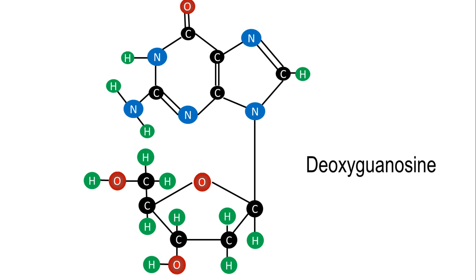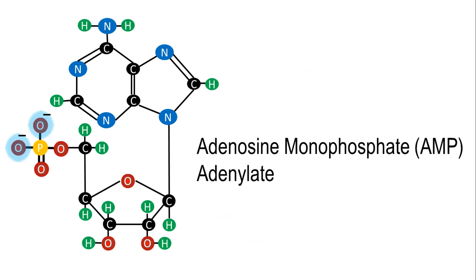When a phosphate group is covalently bound to a nucleoside, the molecule is now a nucleotide. A ribonucleotide of adenine is called adenosine monophosphate, AMP or adenylate. The same applies for all the other bases.